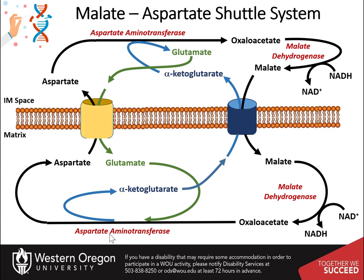In the matrix, aspartate aminotransferase uses glutamate and oxaloacetate as substrates to generate aspartate and alpha-ketoglutarate, enabling the transport of aspartate and glutamate through their specific antiporter. Within the gluconeogenic pathway, heightened levels of oxaloacetate are produced in the matrix of the mitochondria. Oxaloacetate is then converted to aspartate and transported across the inner membrane, where it can subsequently be converted back to oxaloacetate and used for the production of glucose.